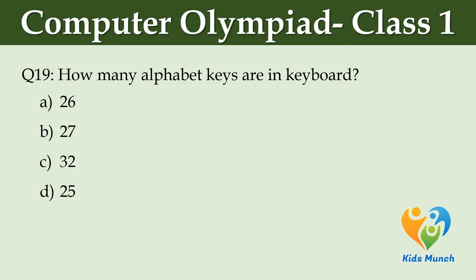How many alphabet keys are on a keyboard? Option A: 26. Option B: 27. Option C: 32. Option D: 25.